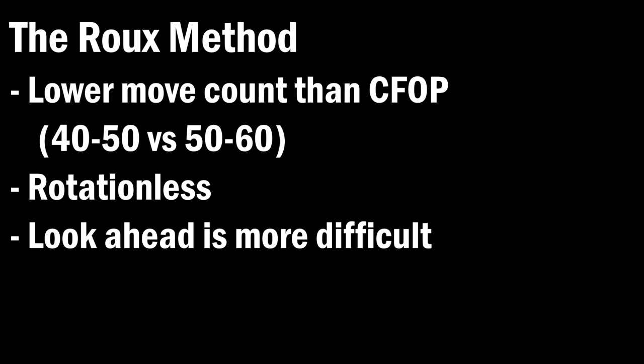One of the main downsides of Roux is that lookahead is difficult. This is because in CFOP, with a solved cross, that is four solved pieces in the bottom already, and with Roux, you'll have one unsolved piece at the bottom during second block, and also the M slice is completely unsolved and keeps changing.